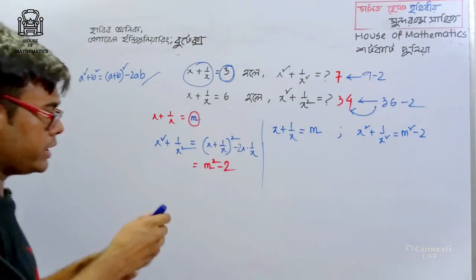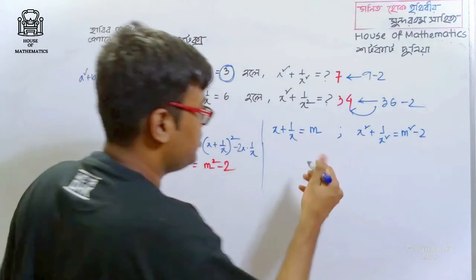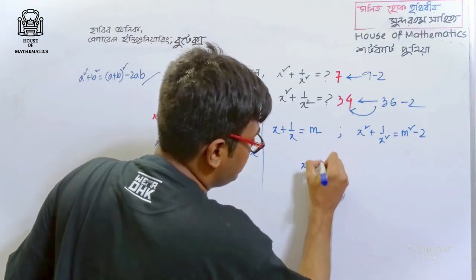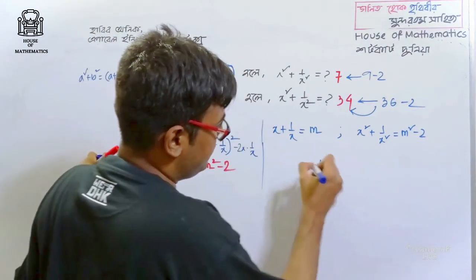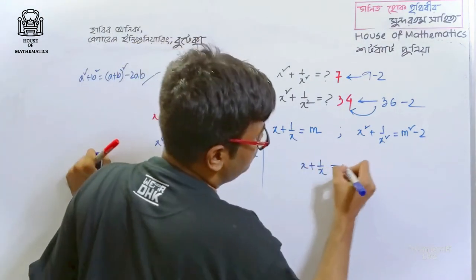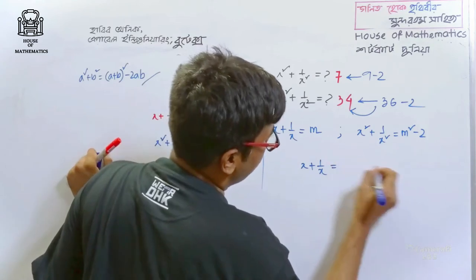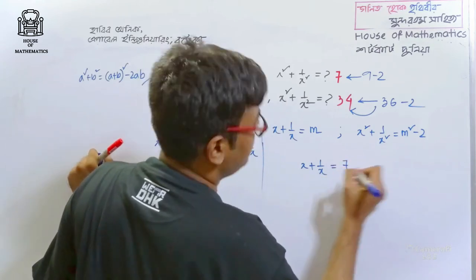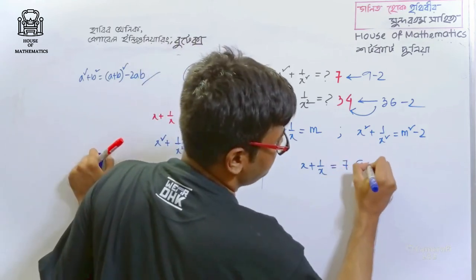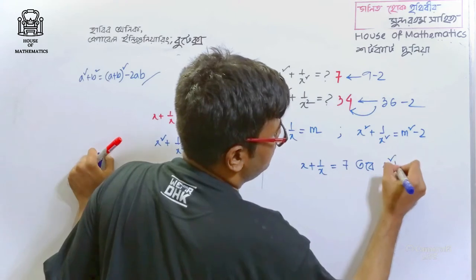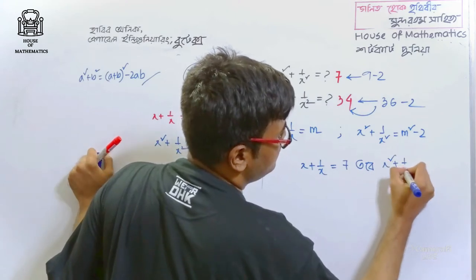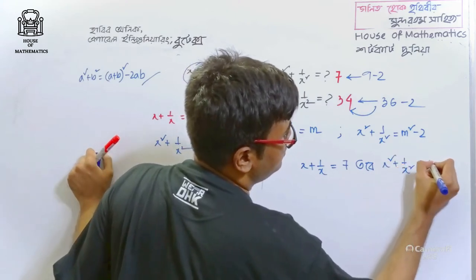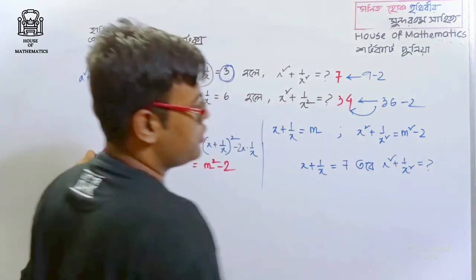We can do this. If x plus 1 by x is equal to 7, then x squared plus 1 by x squared is equal to how much?